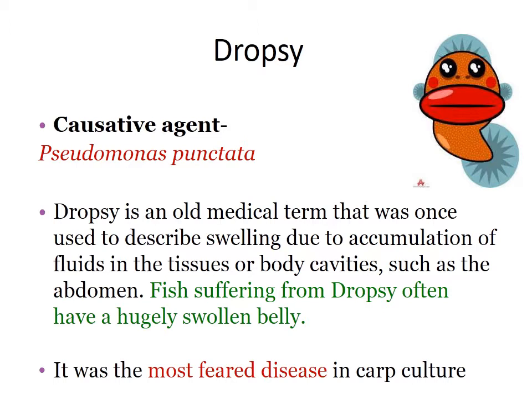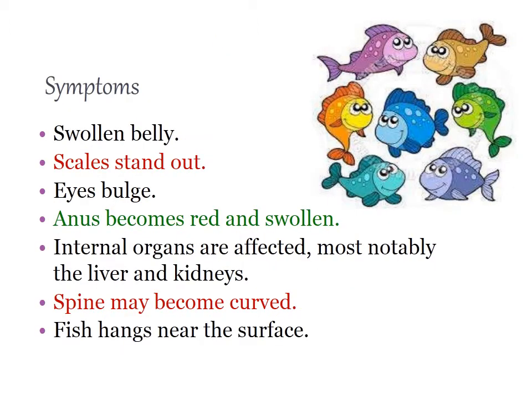Dropsy is an old medical term that was once used to describe swelling due to accumulation of fluids in the tissues or body cavities such as the abdomen. Fish suffering from dropsy often have a hugely swollen belly. It was the most feared disease in carp culture. Symptoms include swollen belly, scales standing out, and eyes bulging.